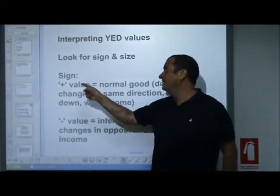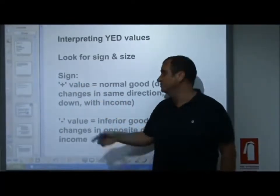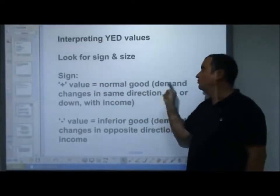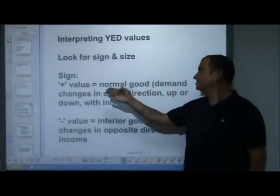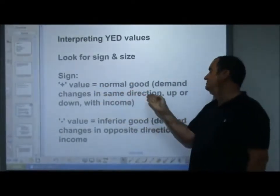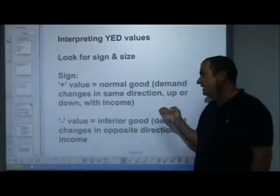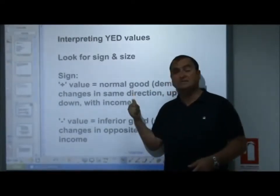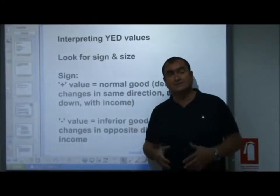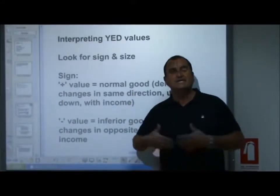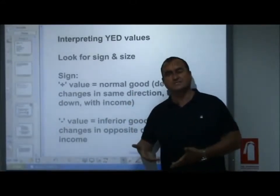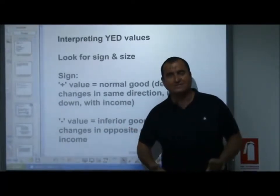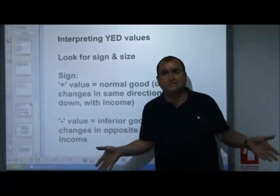If you get a plus value out of the YED calculation, it means the good is a normal good. That means demand changes in the same direction — up or down — with income. Most goods are normal goods, so most YED values come out as positive. If income rises, we buy more of it; if our income falls, we buy less. That's true for 99% of goods.